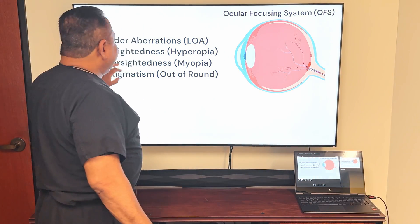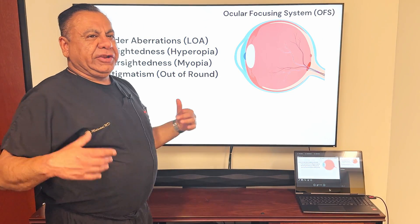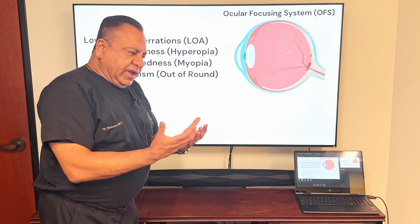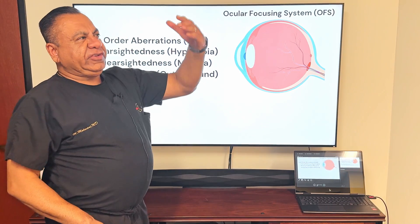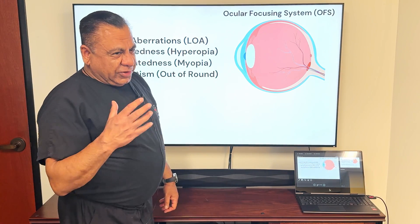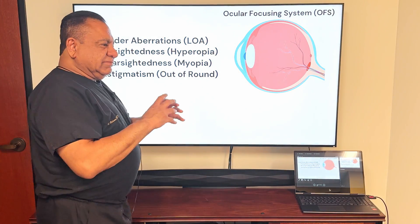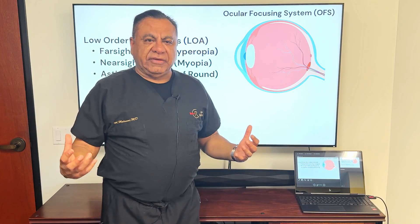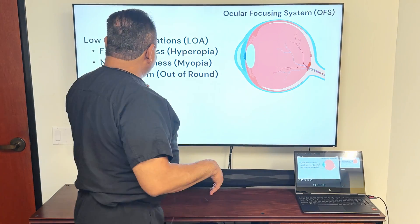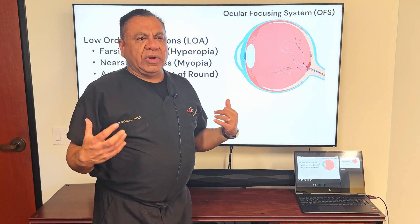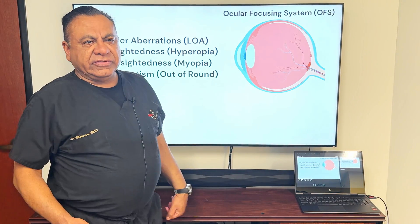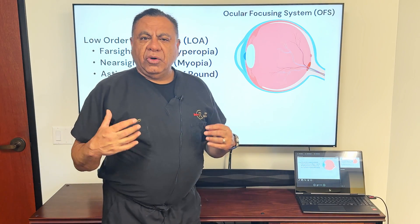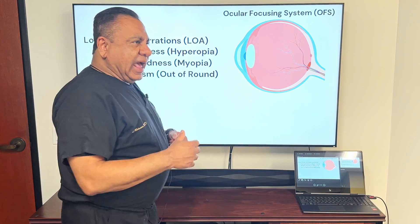Lower-order aberrations are what we know classically as nearsightedness, farsightedness, and astigmatism. Nearsighted means you can see up close but not far; farsighted means you see better at distance, though you lose both with age. Astigmatism is when the cornea or focus system is out of round, distorting things like a funhouse mirror. These are what get measured when you go to an optical shop for glasses or contacts, and in almost all forms of LASIK performed today.